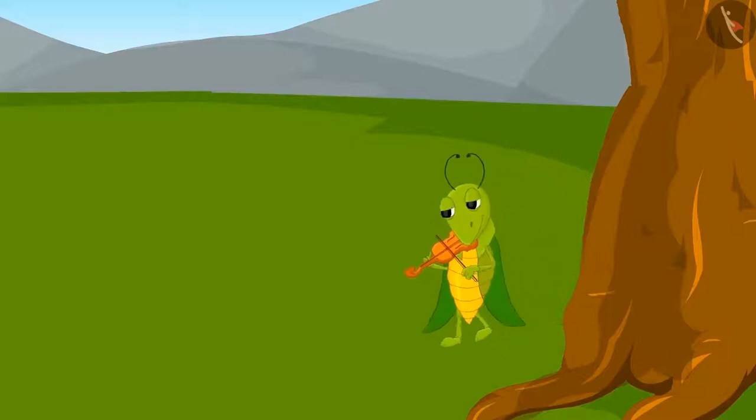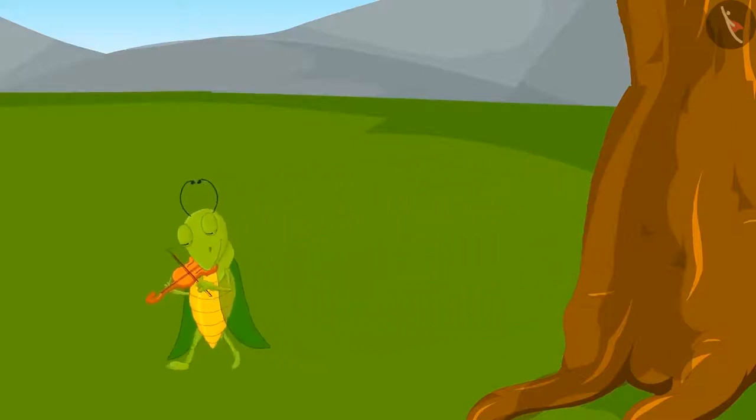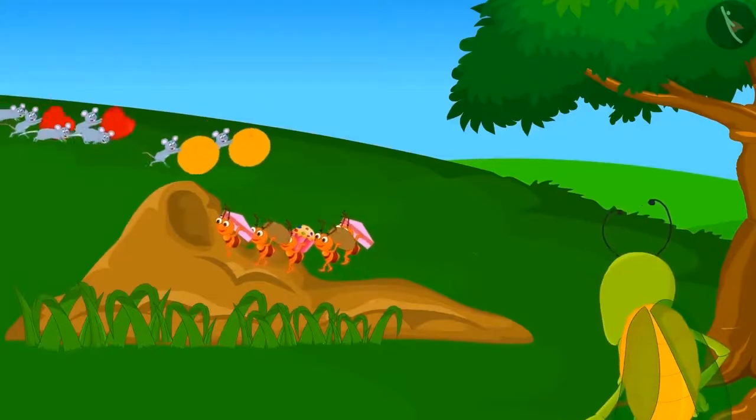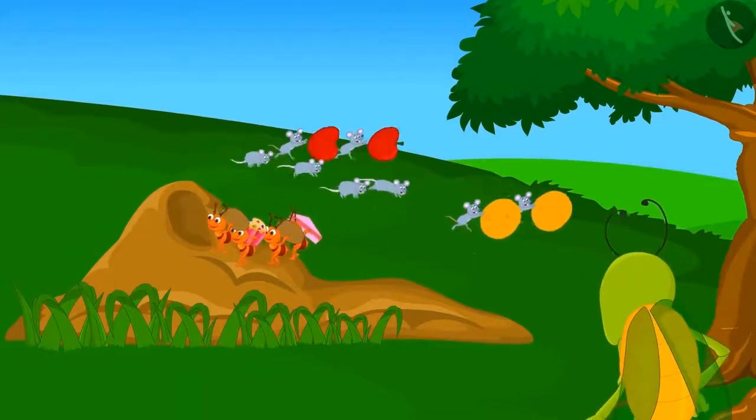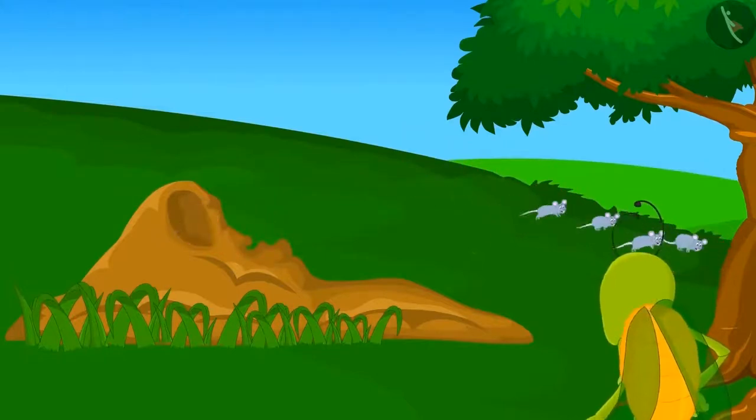One day, Tinku the grasshopper was walking around playing the violin. Suddenly, he saw a herd of ants and mice. The ants and mice were carrying pieces of some food items.